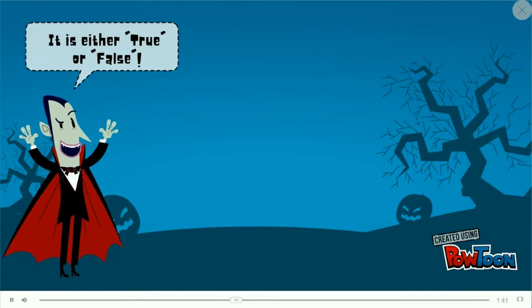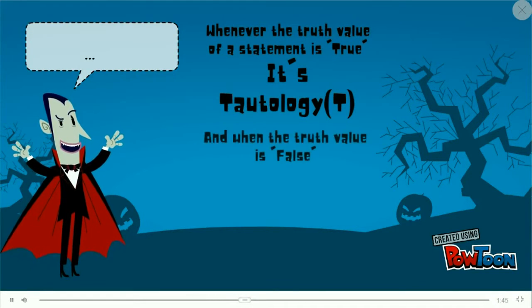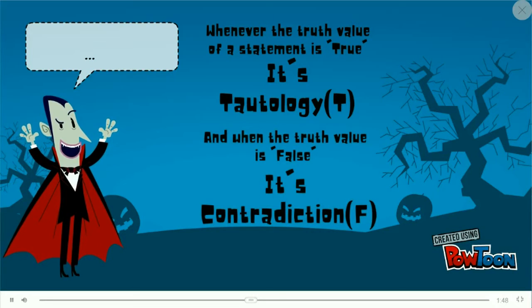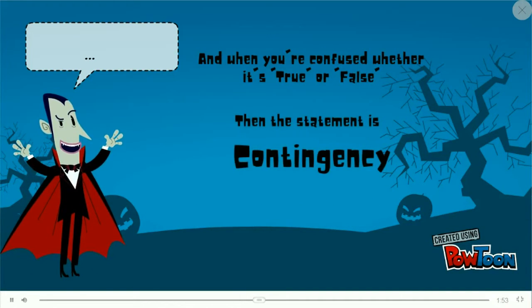A statement always has two truth values. It is either true or false. Whenever the truth value of a statement is true, it's tautology, and when it's false, it's contradiction. And when you're confused whether it's true or false, the statement is contingency.